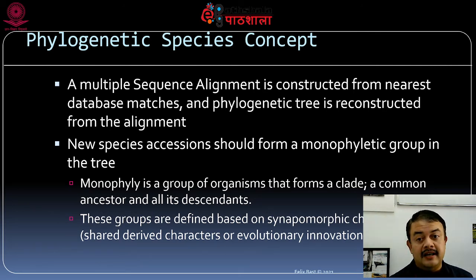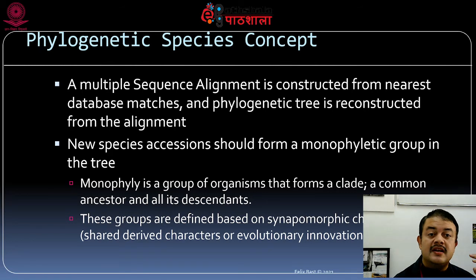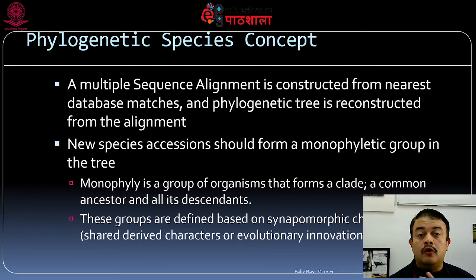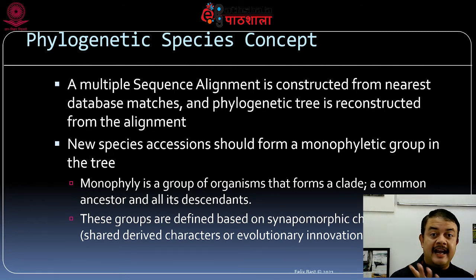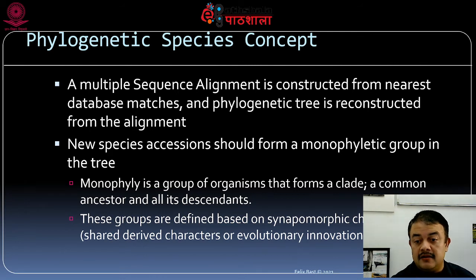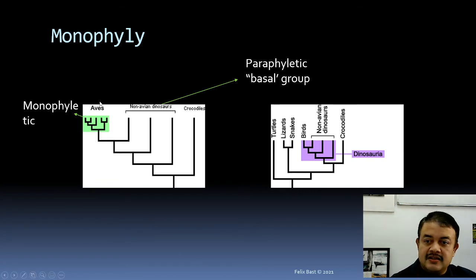There is also the phylogenetic species concept. A multiple sequence alignment is constructed from the nearest database matches and a phylogenetic tree is reconstructed from the alignment. The new species accessions should form a monophyletic group in the tree. Monophyletic means a group that forms a clade consisting of a common ancestor and all its descendants. These groups are based on synapomorphic characters — shared derived characters or evolutionary innovations. Only clades are named under the phylogenetic species concept.